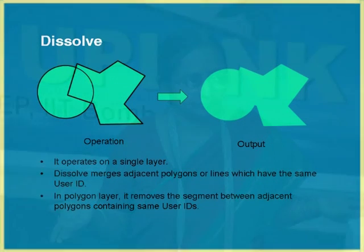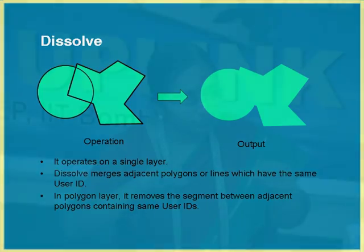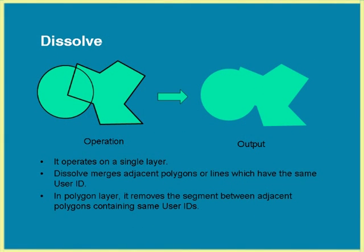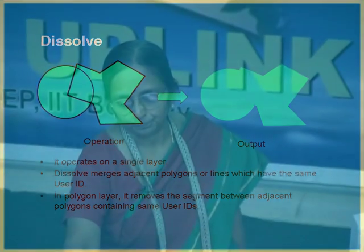Eliminate is a common operation, and another is dissolve. Dissolve is like eliminate but instead of eliminating, suppose when you overlay you come across two polygons with the same new ID generated — say soil-1 slope-1 — and two adjacent polygons have the same ID. Then why should you have two polygons? The common boundary can be removed. Dissolve is such that if two polygons have the same user ID, the common area gets erased and it becomes a single polygon.